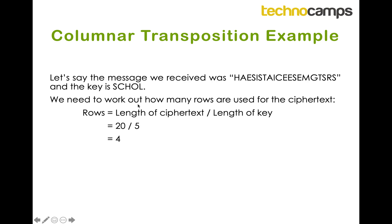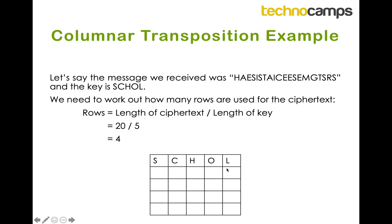Next I need to work out how many rows I have. My new key is five letters long. I count the cipher text and it's 20 letters. So I do 20 divided by 5 which gives me 4. I now know I've got 5 columns and 4 rows. I can draw my grid — 5 columns by 4 rows — and I've added an extra row at the top with my key letters in it.